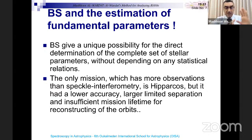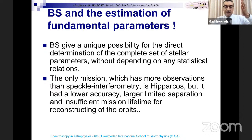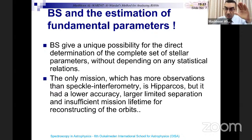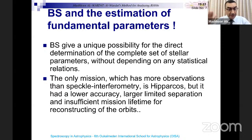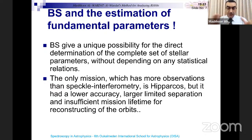Hipparcos was launched in 1989, the mission ended in 1993, the catalog was published in 1997, and Van Leeuwen re-analyzed the data and published an updated catalog in 2007. However, Hipparcos had lower accuracy, larger limiting separation, and insufficient mission lifetime — only three years — for reconstructing orbits of binaries with periods of tens of years.